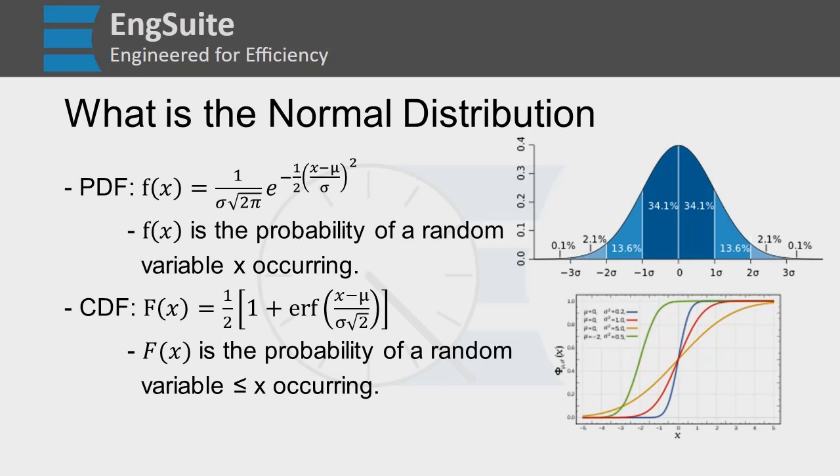The formula for that is 1/2 times (1 plus the Gaussian error function of (x minus μ) over (σ times square root 2)), where μ is the mean and σ is the standard deviation.